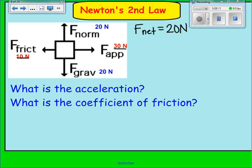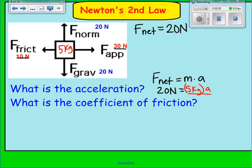The question asks for the acceleration and the coefficient of friction. To find acceleration, we use Newton's second law: force net equals mass times acceleration. The net force is 20 newtons, and the block's mass is 5 kilograms. So acceleration equals 20 newtons divided by 5, giving us 4 meters per second squared. Notice the acceleration is positive because the net force was positive — force net and acceleration always go together.